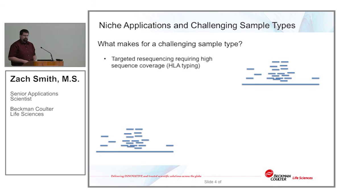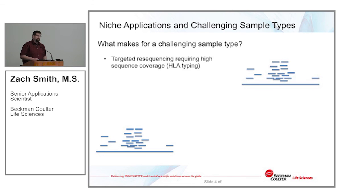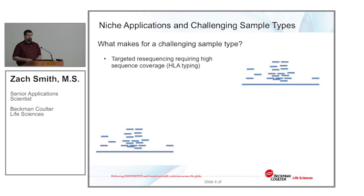We have four major areas where we're looking at challenging sample types. The first is targeted resequencing, which requires high amounts of sequencing coverage for accurate typing. For example, with HLA typing, you really need to zero in on a collection of approximately 21 genes inside the human genome. The workflow required to target your DNA sequencing to just those areas can be quite challenging and complex.